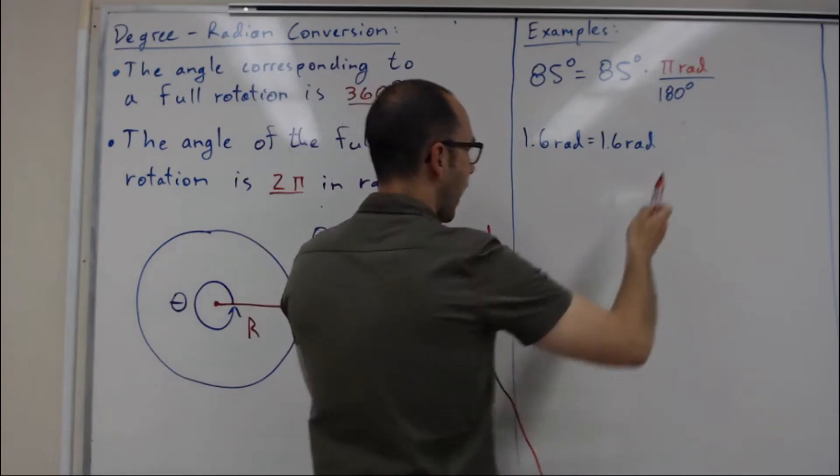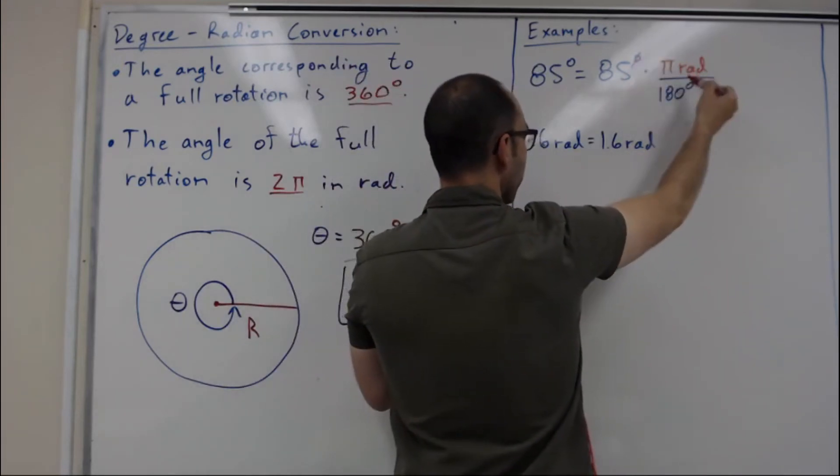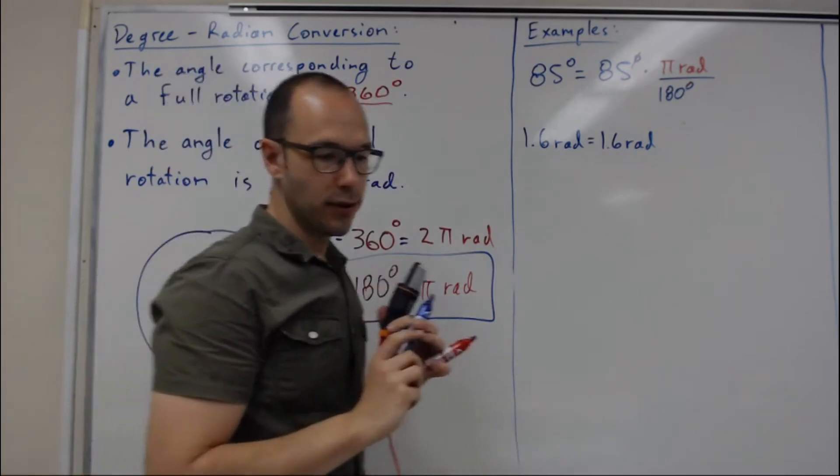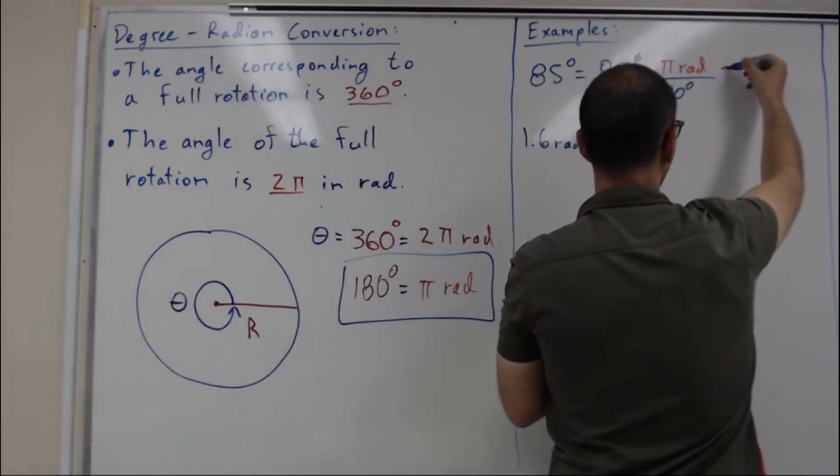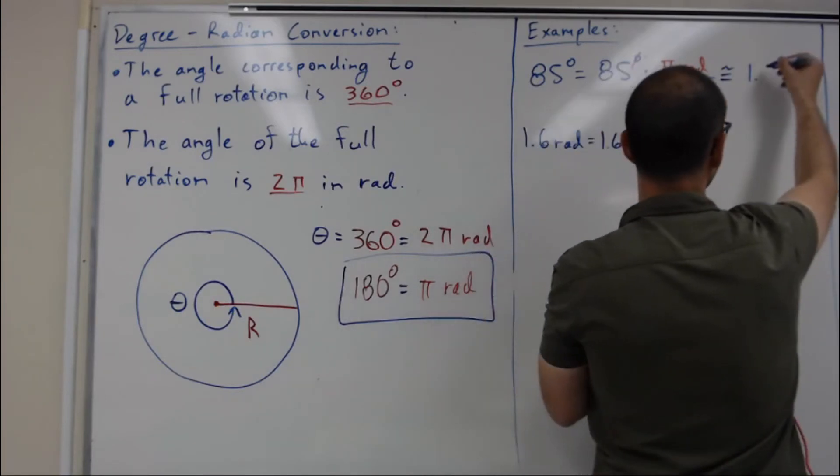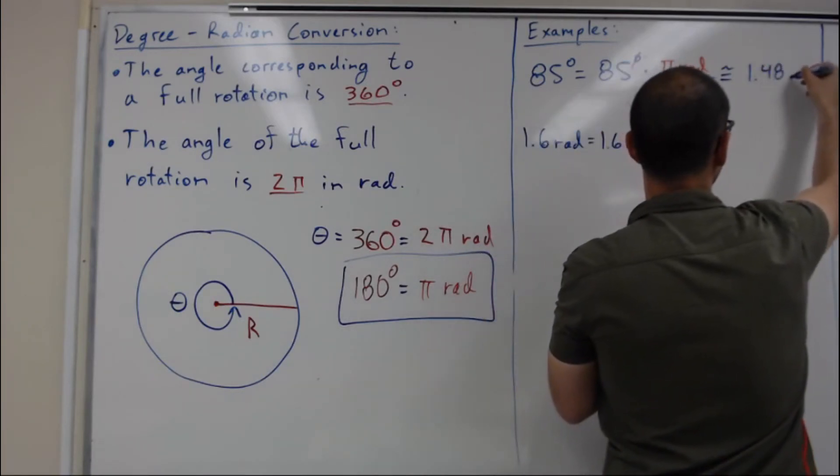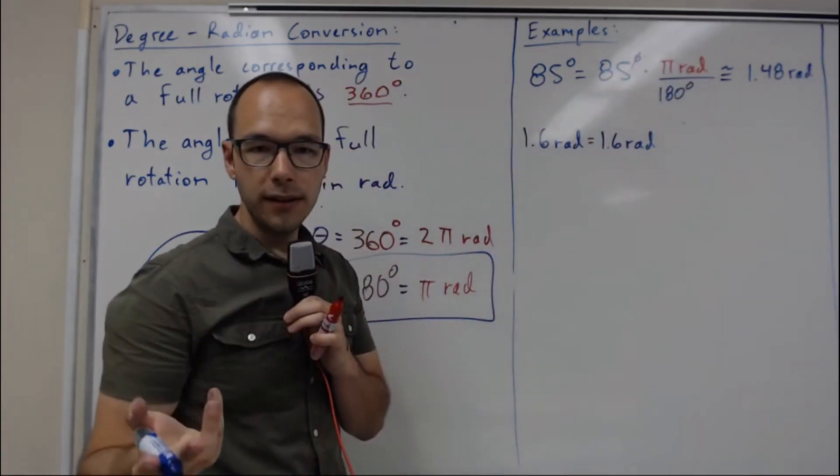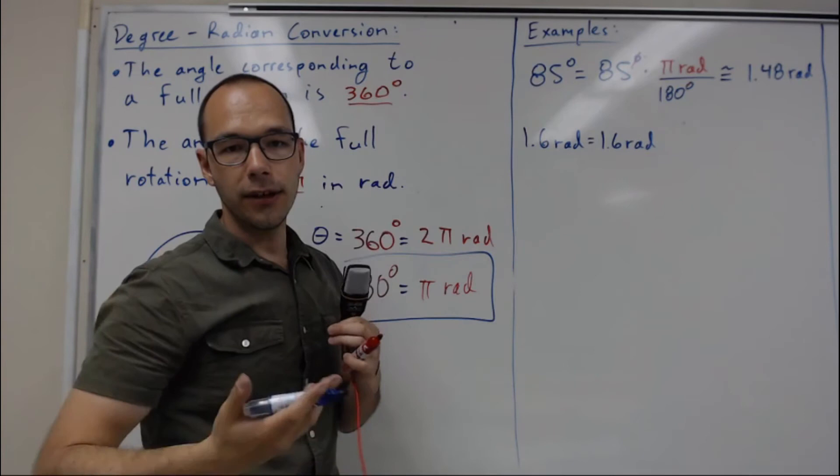I put the degrees at the bottom to cancel them, and I'm left with radians. If I round to two decimals, it's 1.48 radians. You don't have to put the rad units because radians are not actual units.